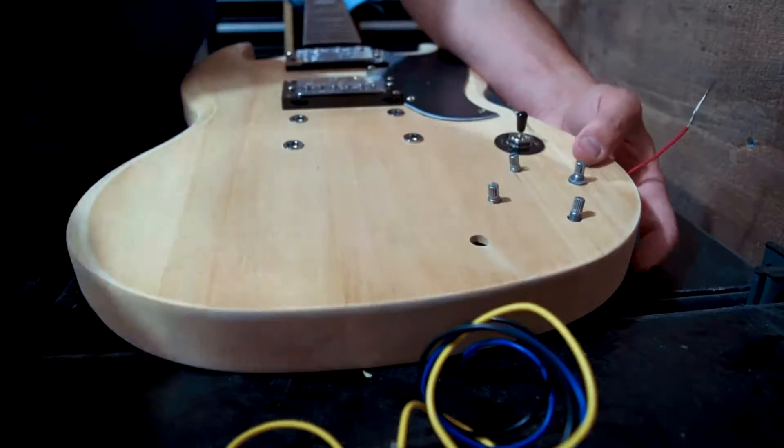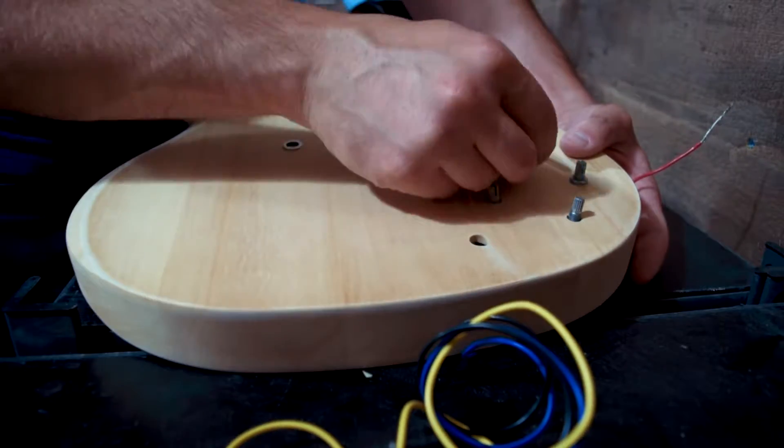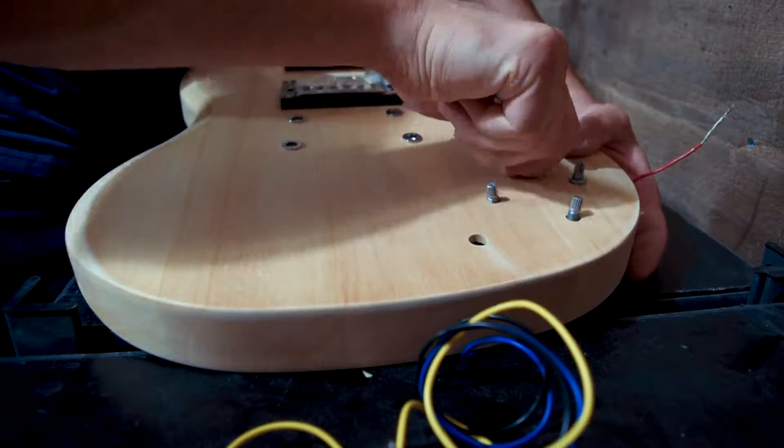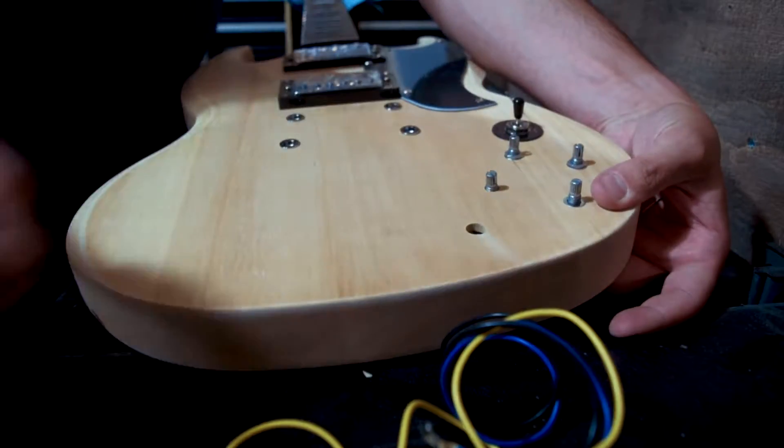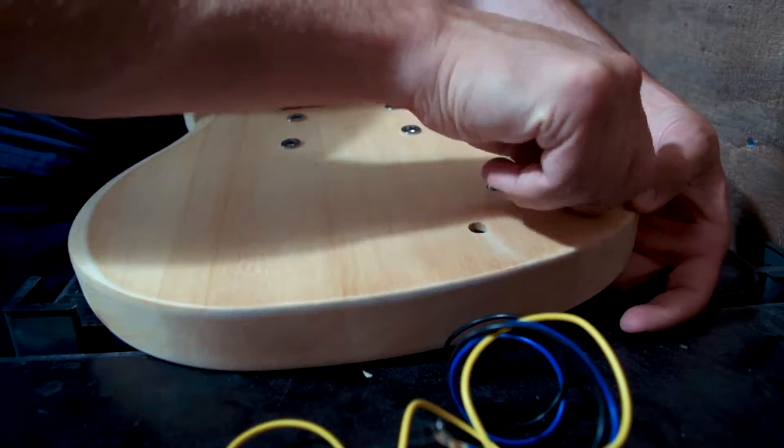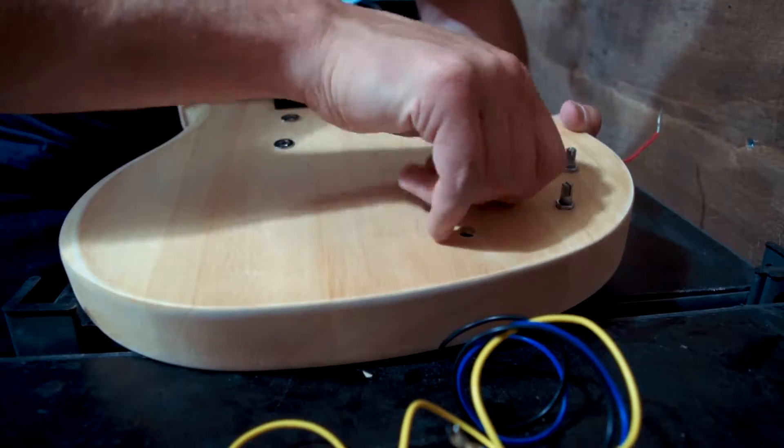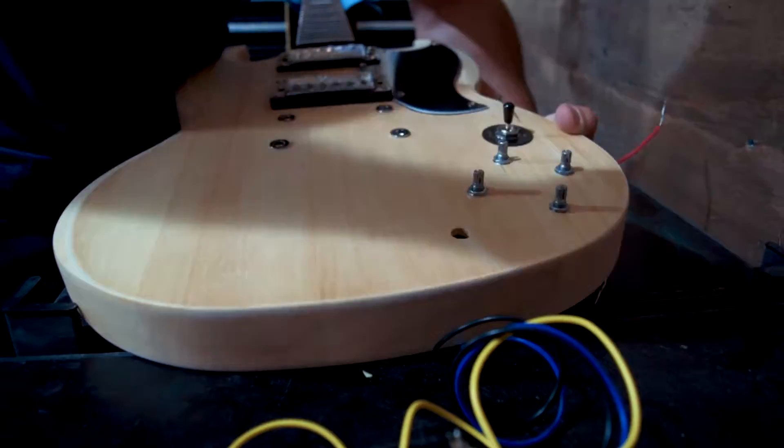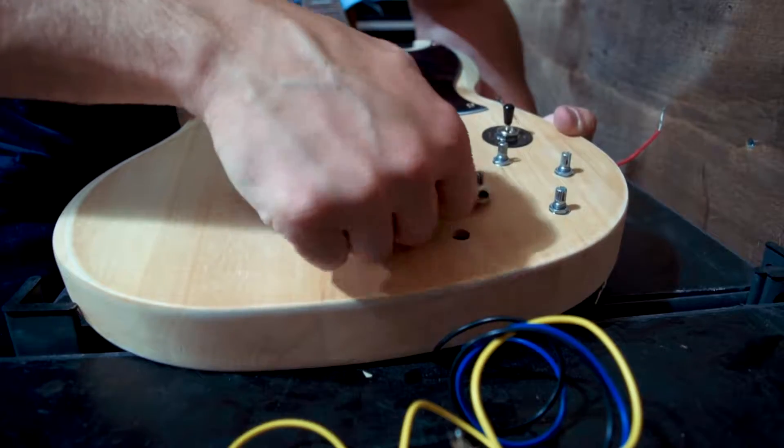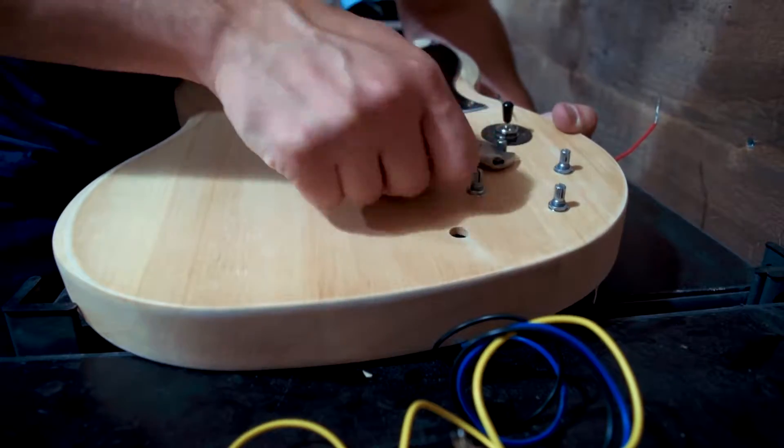Go ahead and install your pots, the harness that comes with the kit next. That's pretty straightforward. You just go ahead and screw them into place. I highly recommend that you check out a wiring diagram from anywhere essentially on Google. Before you go ahead and do this, you want to make sure that the tone pots are where they belong and the volume pots are where they belong.